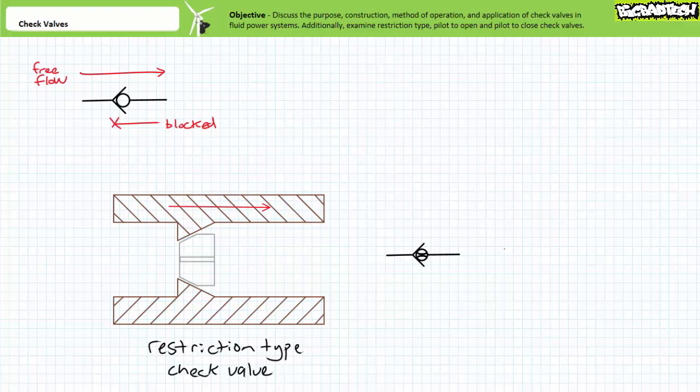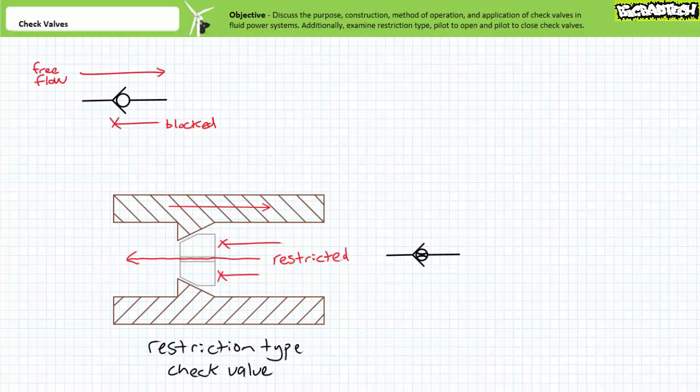A restriction type check valve is basically a regular poppet style check valve with a tiny orifice drilled through the poppet. When fluid enters in the free flow direction, the full poppet is pushed off the seat and fluid flows freely. When fluid enters in the restricted flow direction, the poppet is pushed onto the seat and fluid is forced to travel through the tiny orifice.